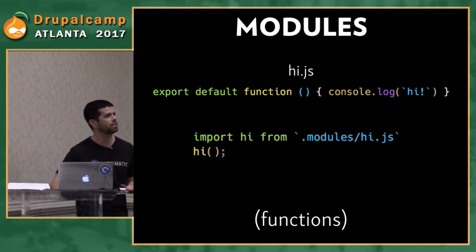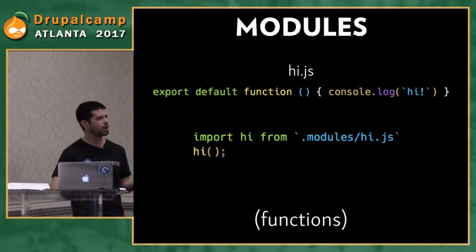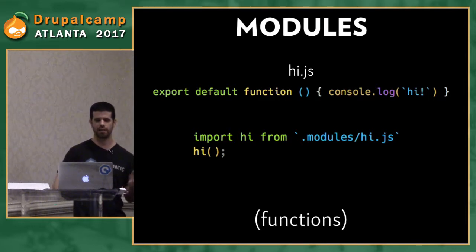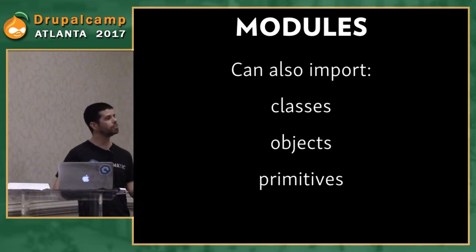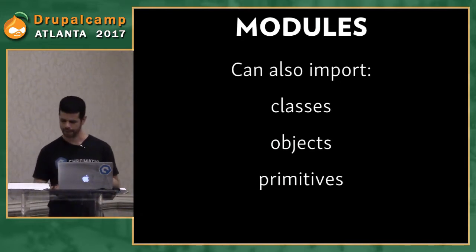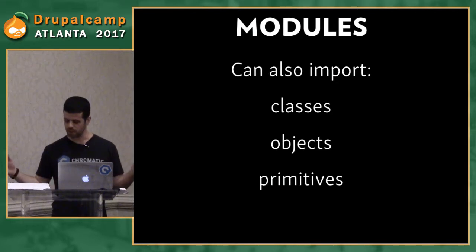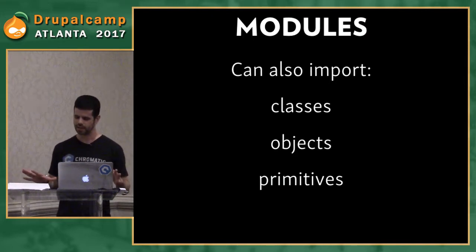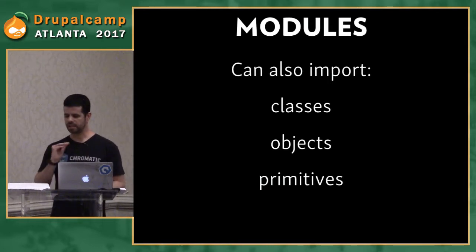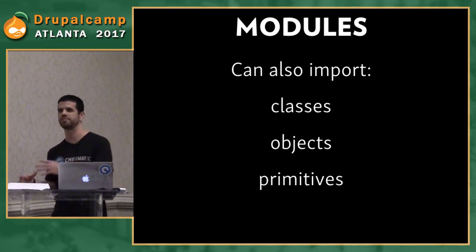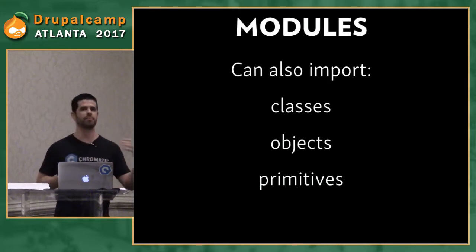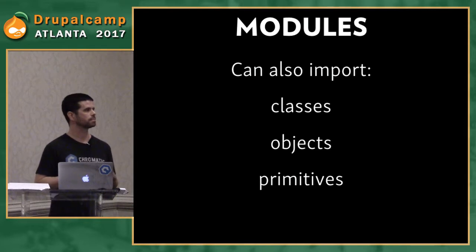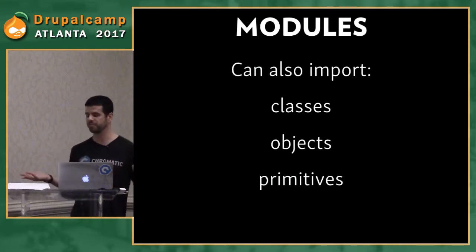You can export functions straight up without needing objects: export default function — import it, you get 'hi.' You can import classes, objects, primitives — all super cool stuff. Once imported, you can reuse it all across your site. I can't stress enough how awesome this is. Once you get your head around it, it'll change the way you develop. It's a big win for cleanliness and reusability, driving home the component-level development the world is shifting to — like doing React but with native vanilla JavaScript.